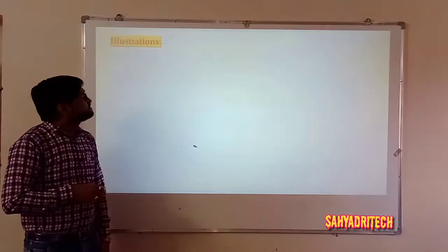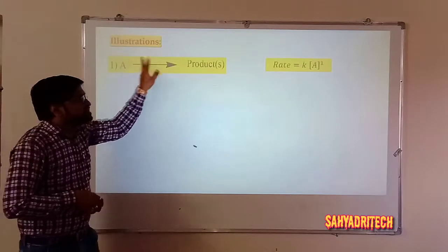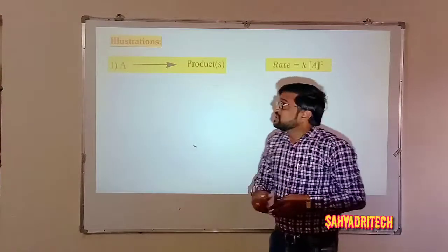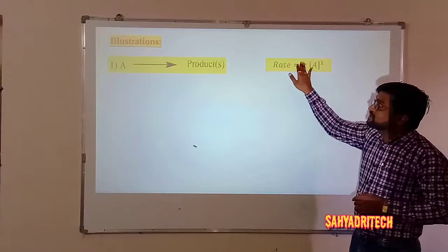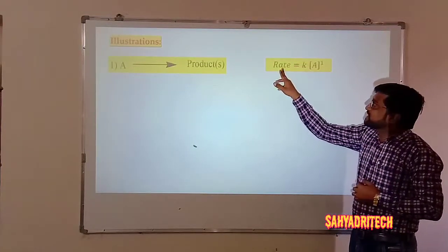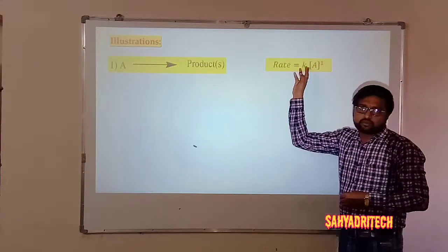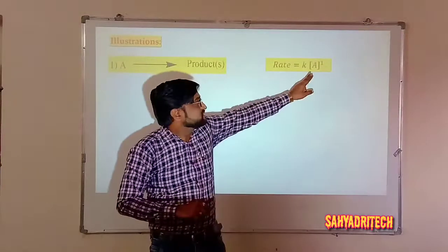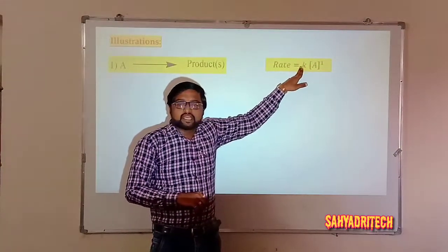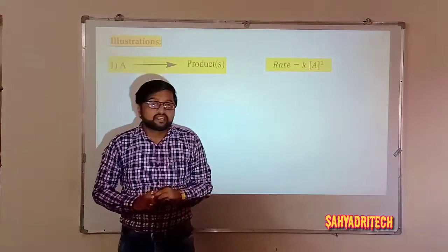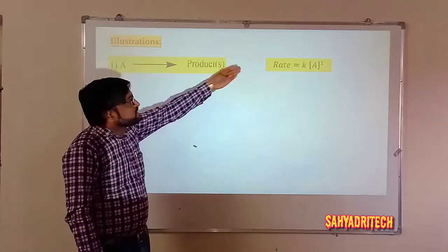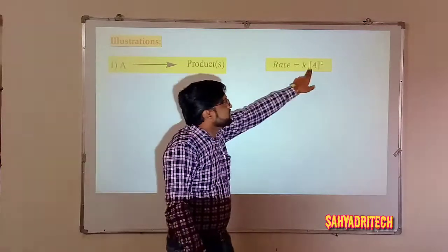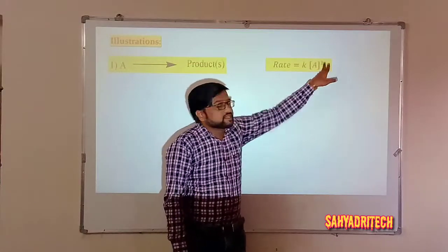Let's go through some illustrations. For a general expression A gives rise to product, according to the Law of Mass Action, rate is proportional to [A]¹. The proportionality symbol is replaced by a constant called the rate constant K. So we write: rate = K[A]¹. The square bracket indicates molar concentration, and the exponent 1 is the stoichiometric coefficient.